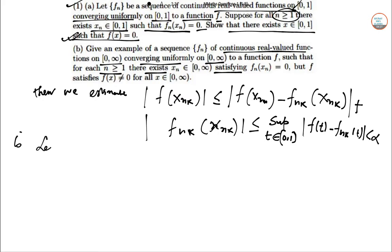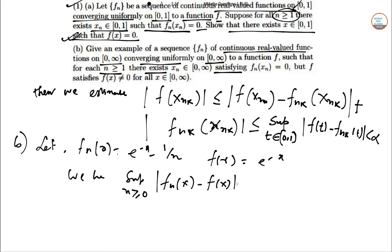So let in B part, Fn of X equal to e to the power minus X plus 1 by N. So F of X is e to the power minus X. So we have supremum X greater than equal to 0. So F of N of X minus F of X equal to 1 by N tends to 0 if N tends to infinity.